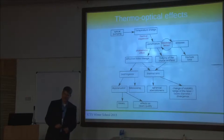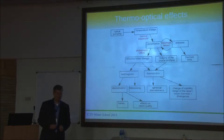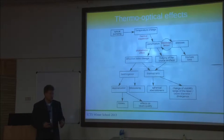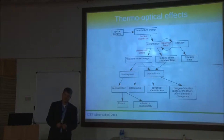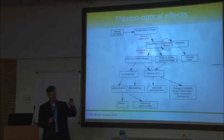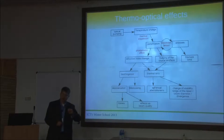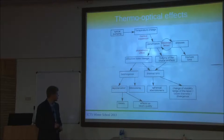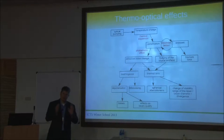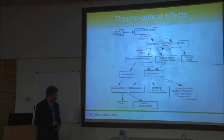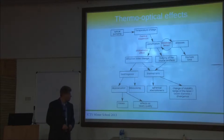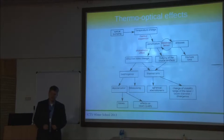Birefringence means you have different indices of refraction for different polarization components — for example, the tangential component and the radial component have different indices of refraction. This causes bifocusing of the beam: different foci for different polarizations. It also causes depolarization — the linearly polarized beam gets degraded. This causes losses and affects the shape of the beam coming out of the laser.